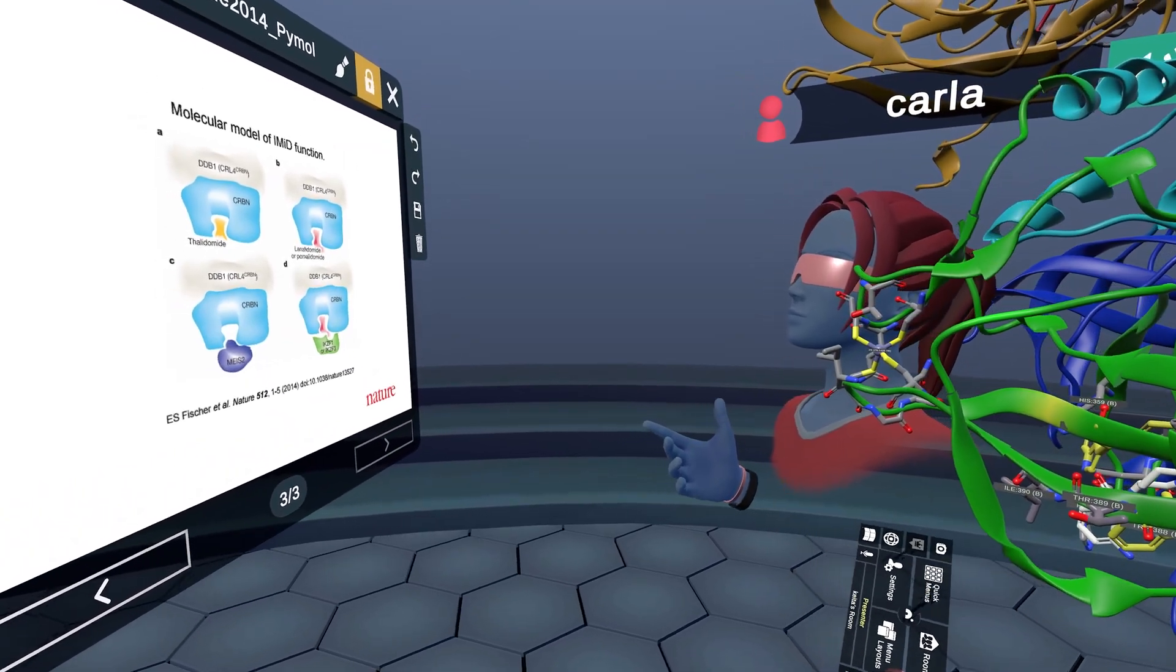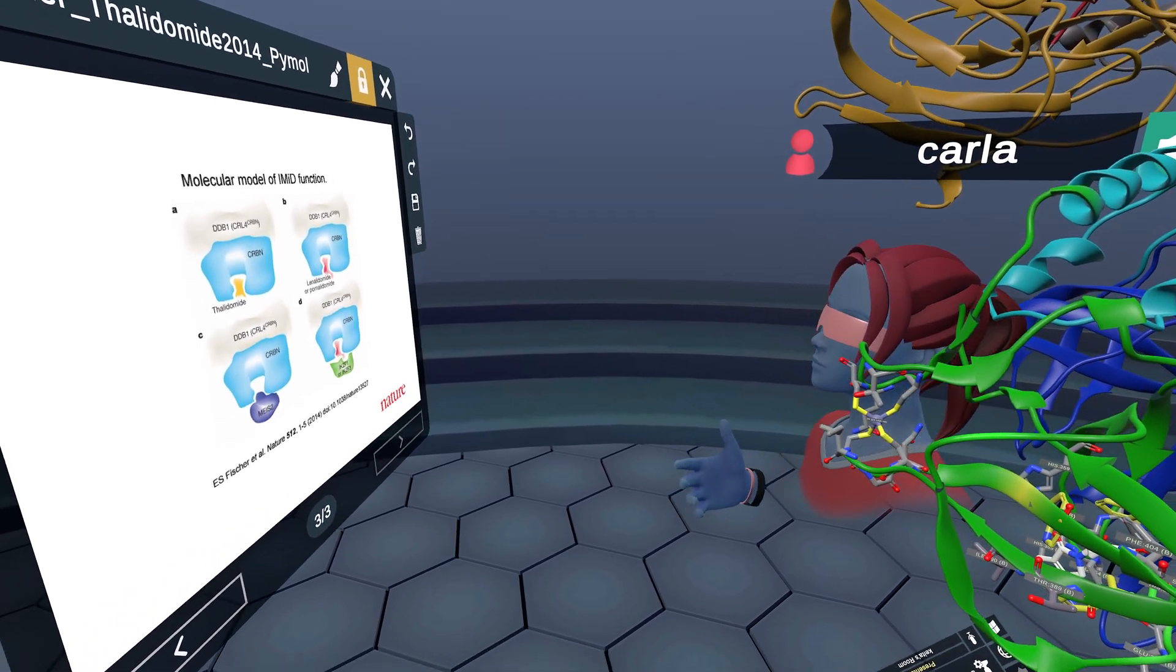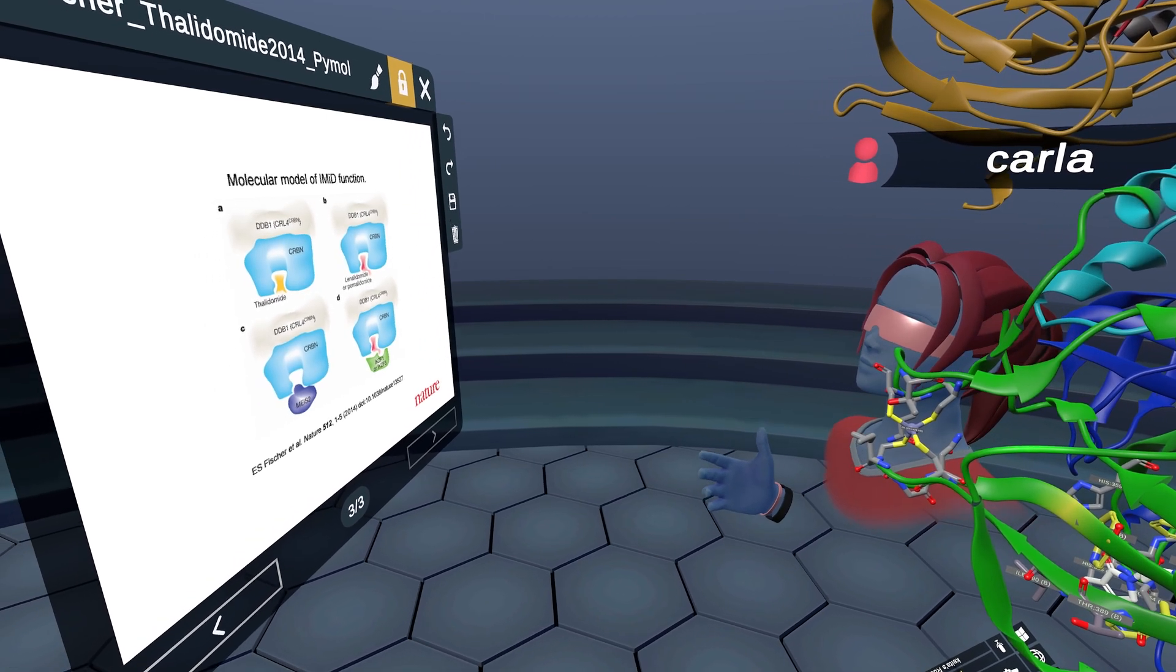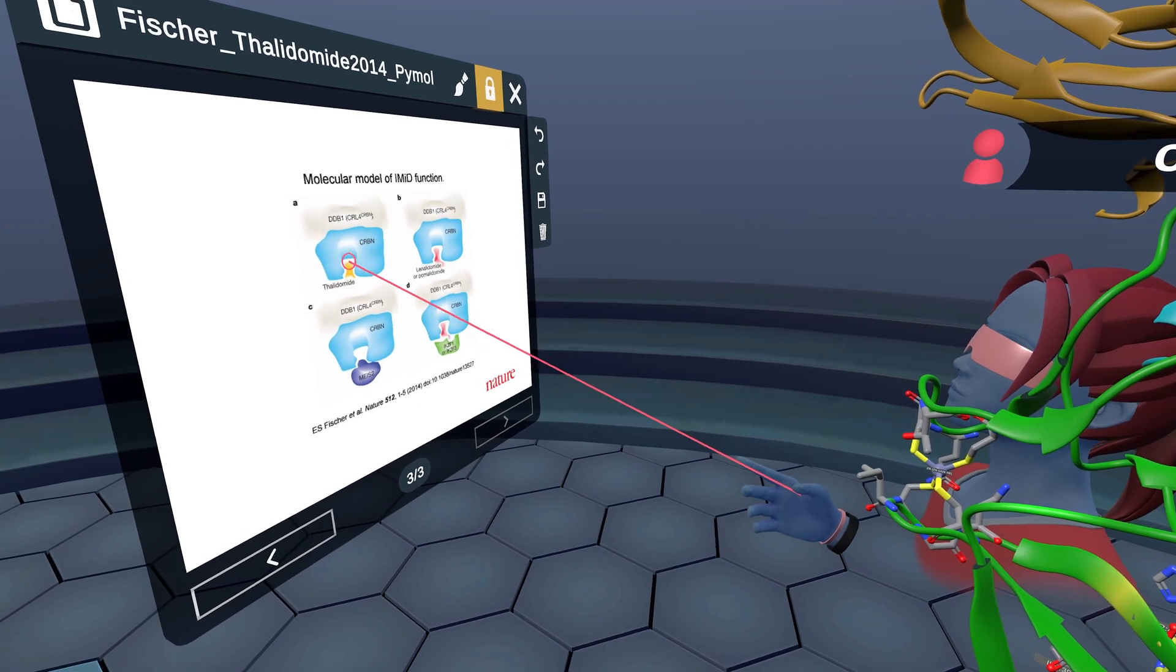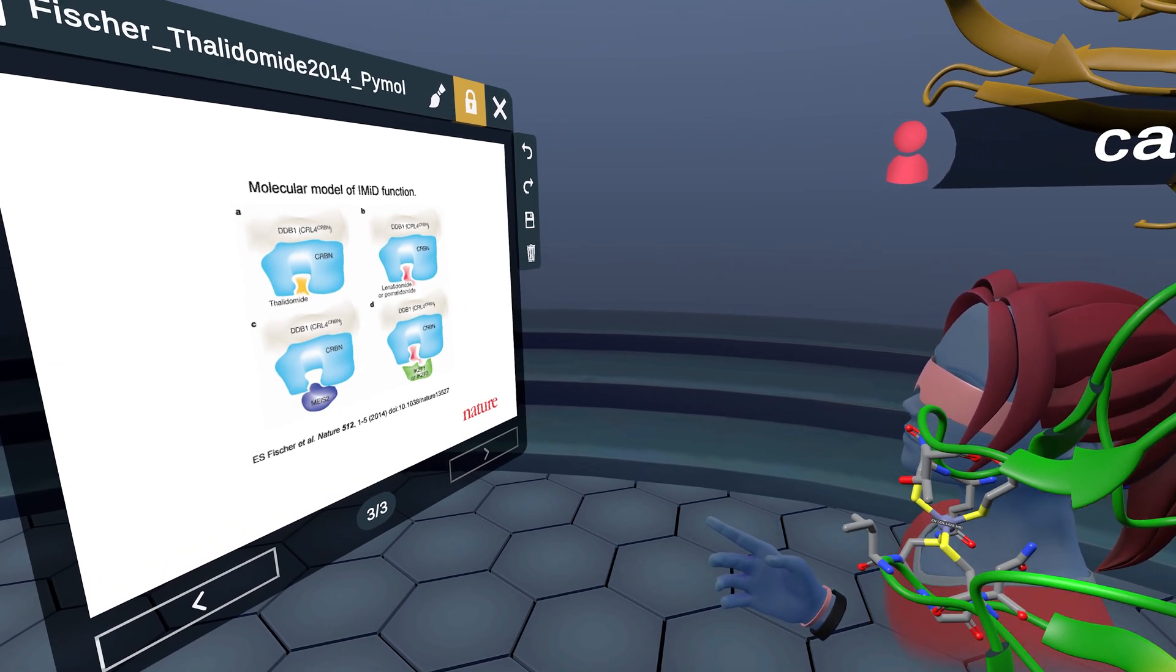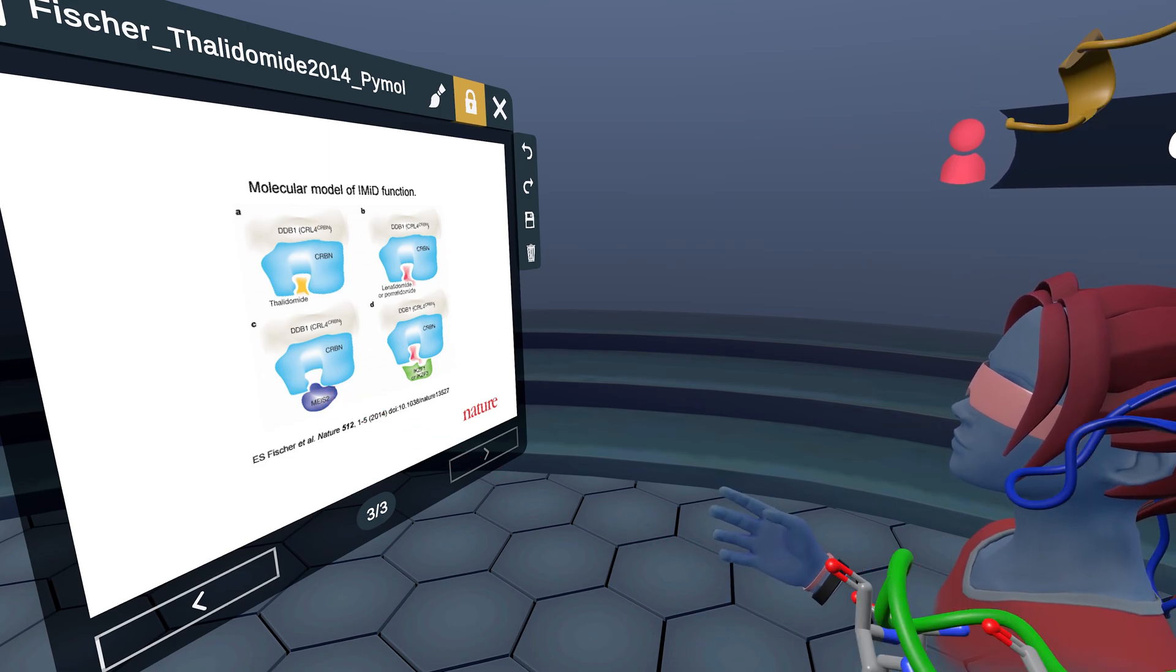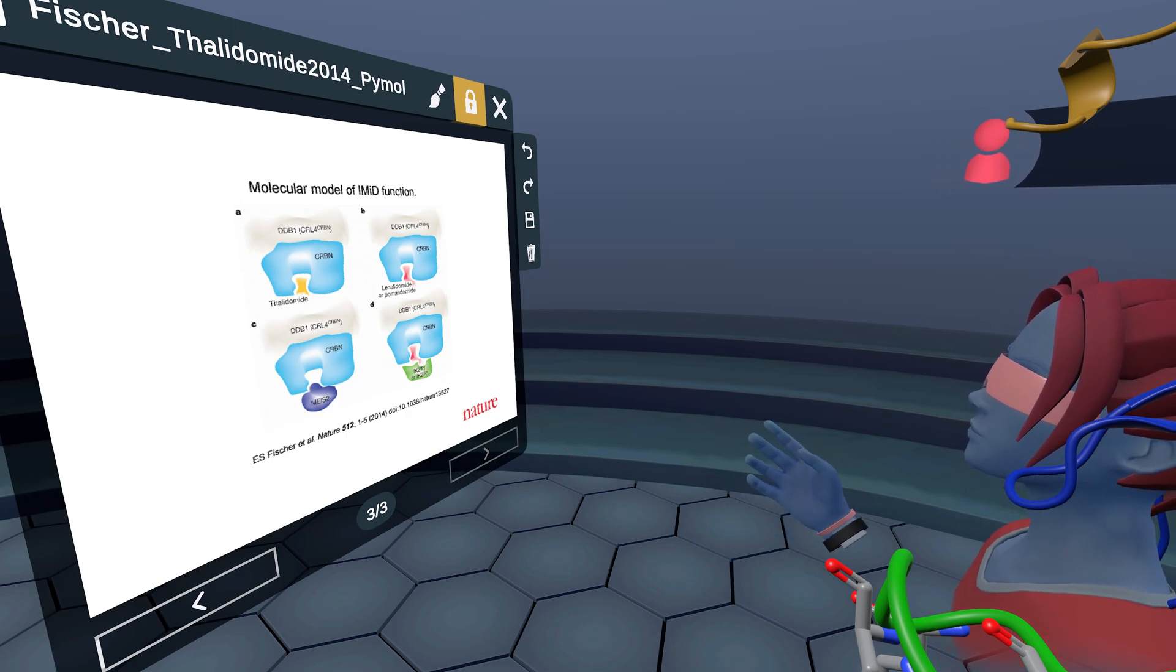On this last figure from the 2014 Nature paper, I wanted to highlight these cartoon representations where they describe the binding of thalidomide with cereblon versus lenalidomide or pomalidomide, which have that amine protruding to the solvent. You can see that these compounds may interfere with endogenous substrate binding, and the lenalidomide and pomalidomide are thought to be responsible for recruitment of the transcription factor Ikaros that ends up getting degraded.